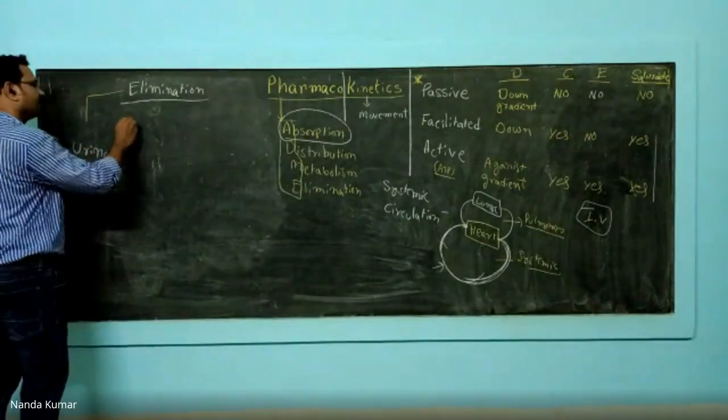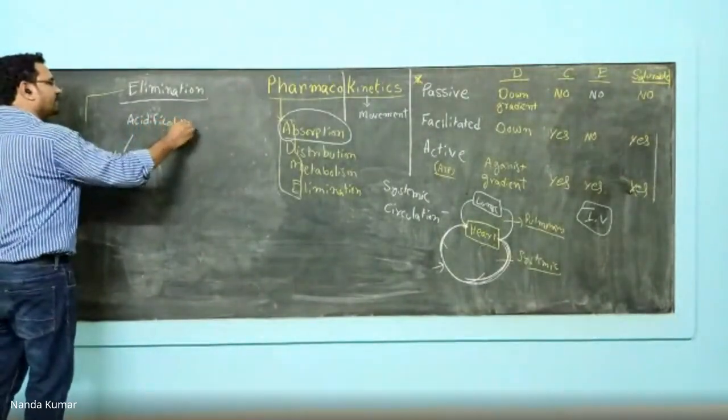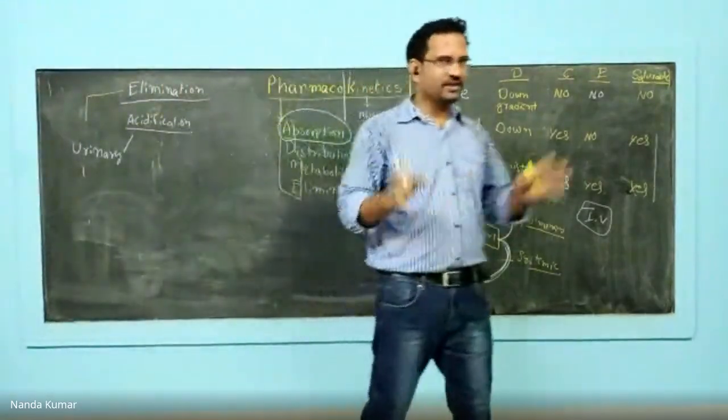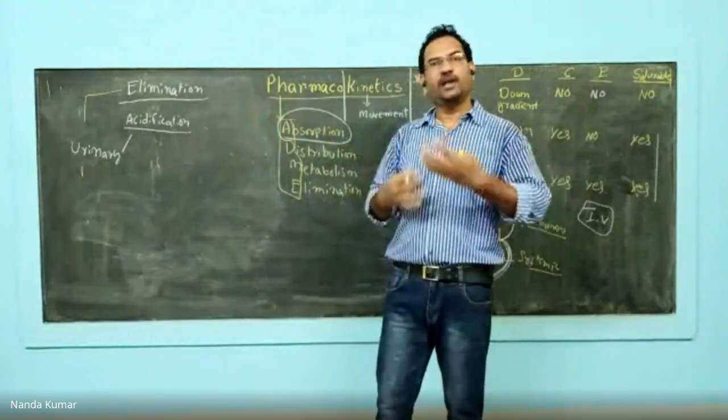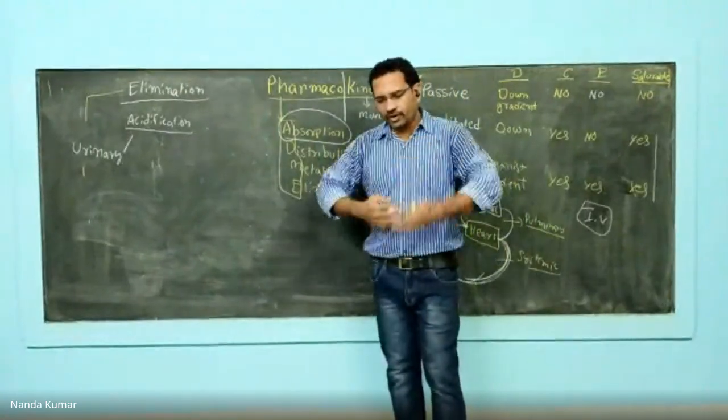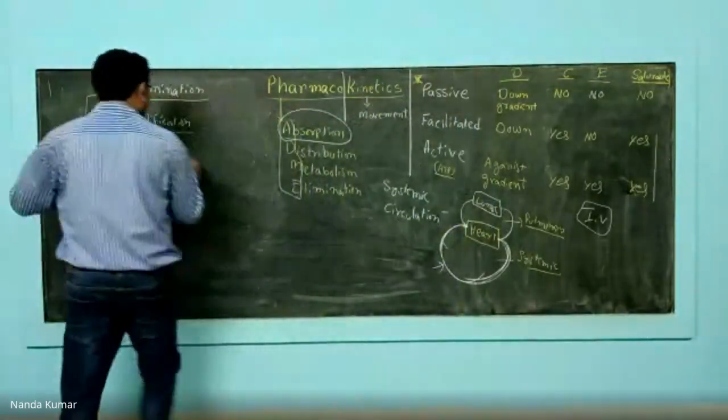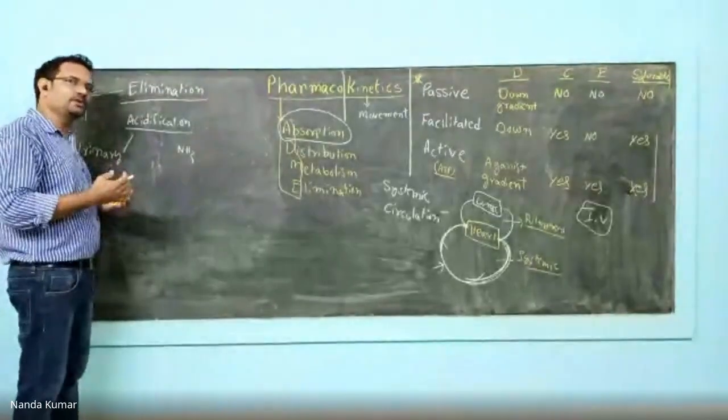Understand urinary acidification. Let's say you have taken basic drugs. Most drugs have an amine group, so they may take up a proton and become alkaline. If you want to increase elimination of basic drugs and you do urinary acidification, in the urine if you increase the acid molecules, the acid will combine with base.